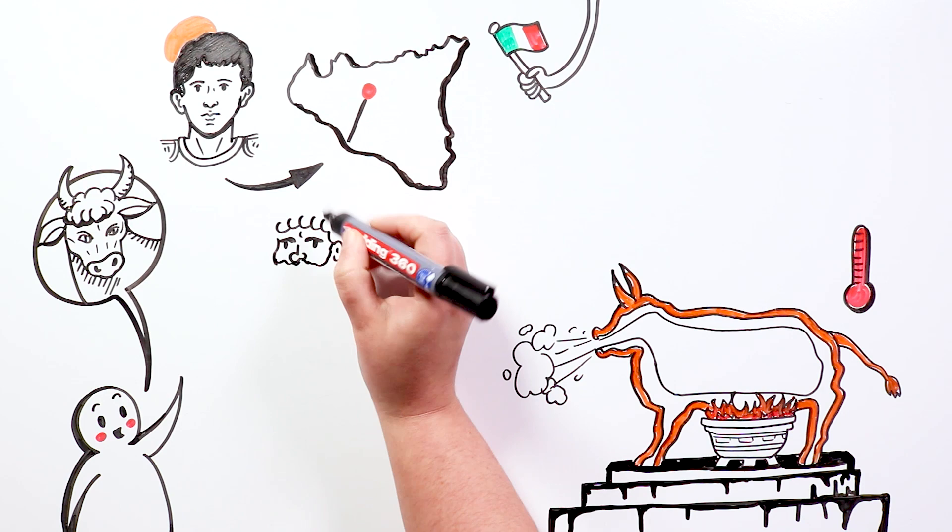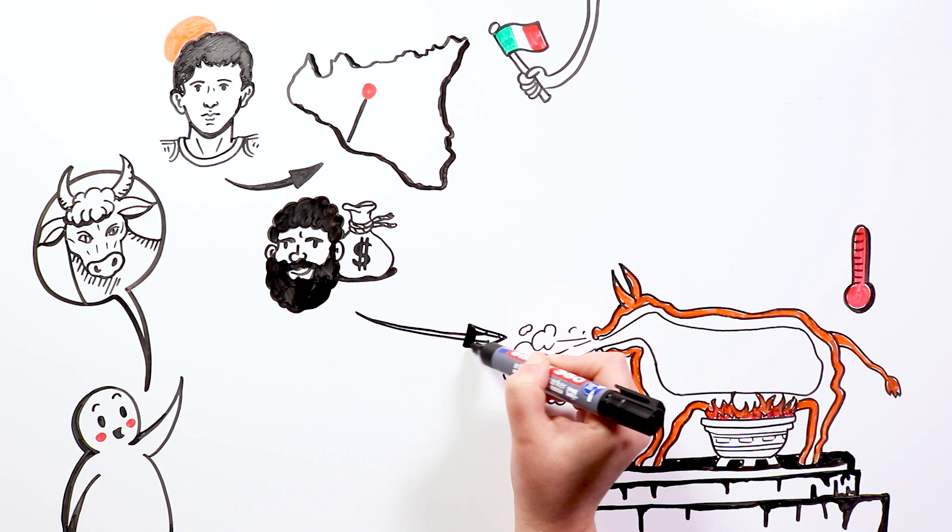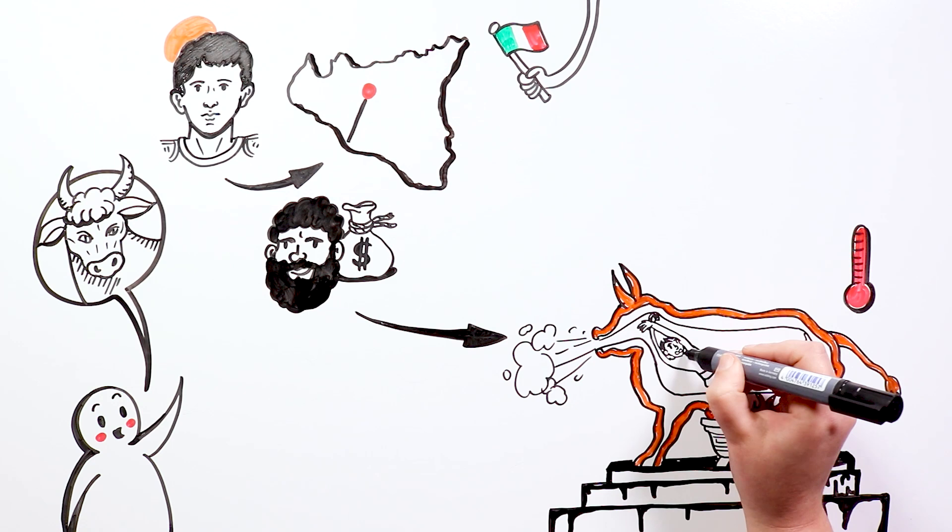Legend has it that Phalaris ruled over the Greek Empire, where Perileus lived, a metalworker who wanted to earn money with his trade. He decided to create for him a bronze bull in which he could put the enemy inside and heat it up to the point that he was cooked.